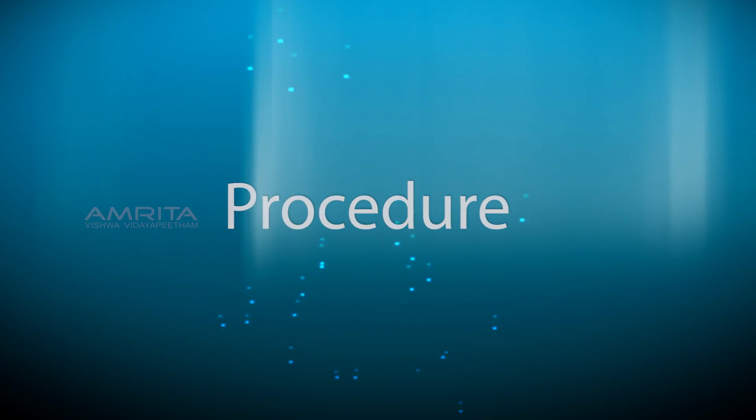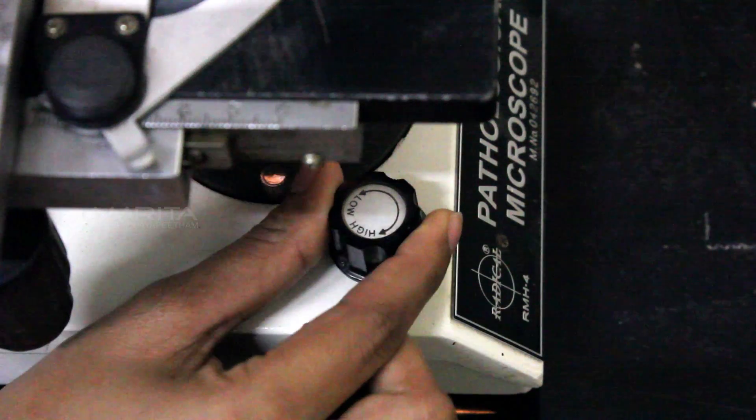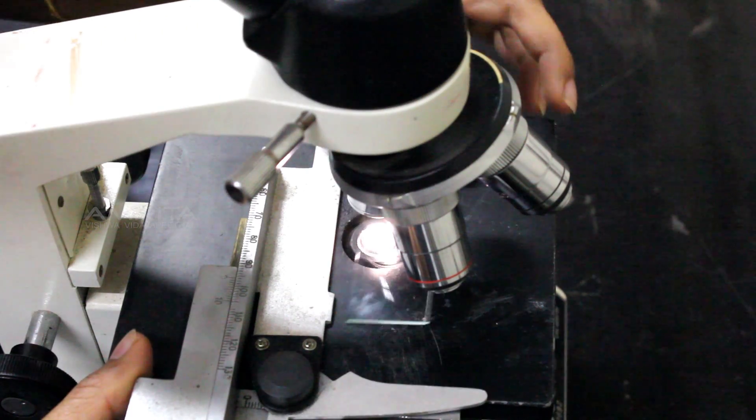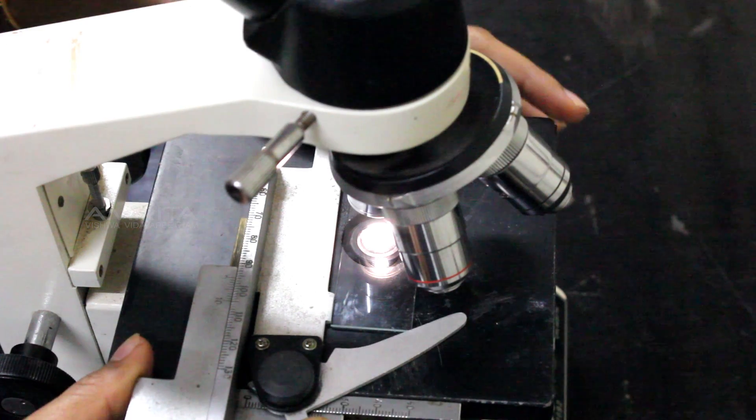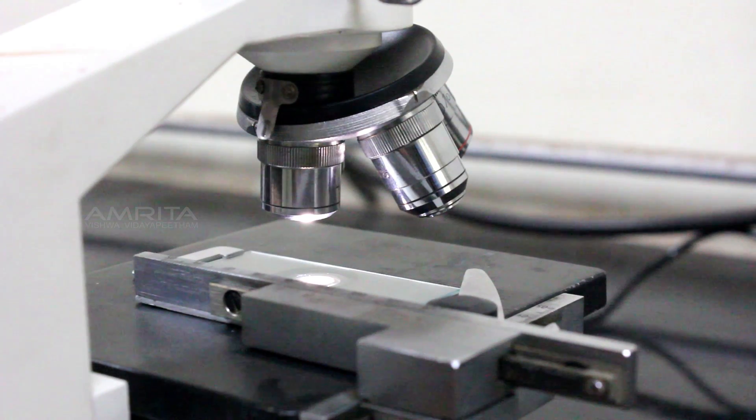Procedure: First, switch on the light source and adjust the light intensity with the help of a rheostat or brightness control. Place the prepared glass slide with the sample on the stage of the microscope and rotate the nose piece to the lowest power objective, at 4x objective lens.